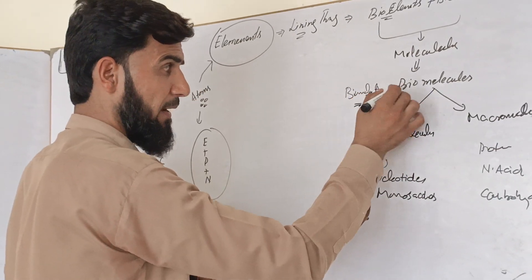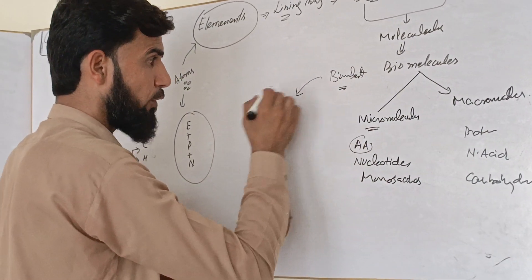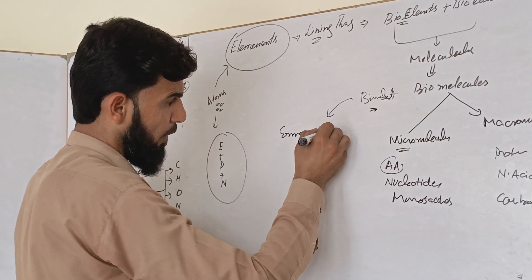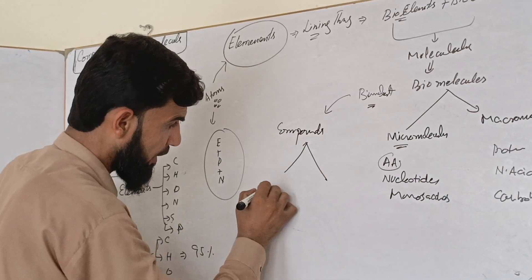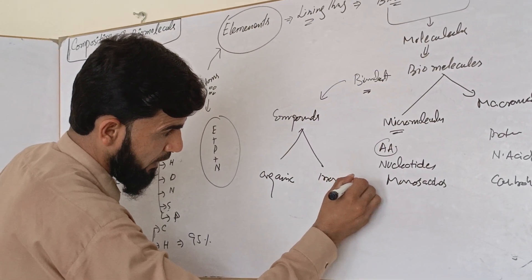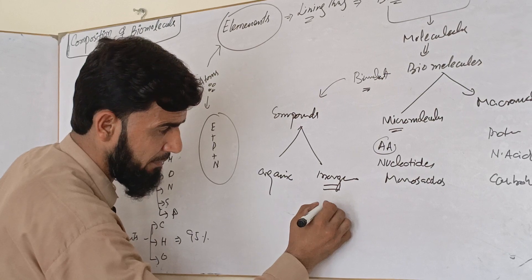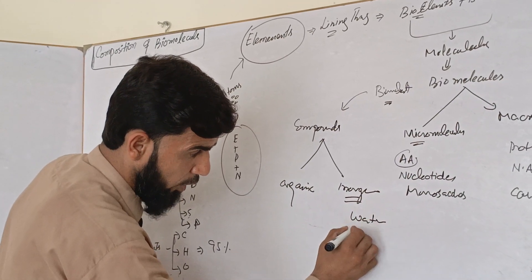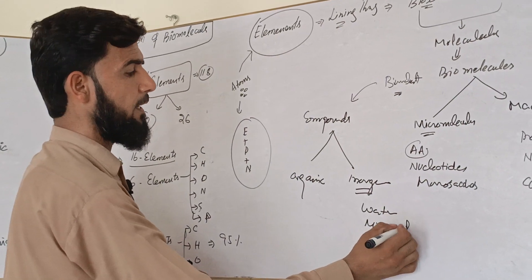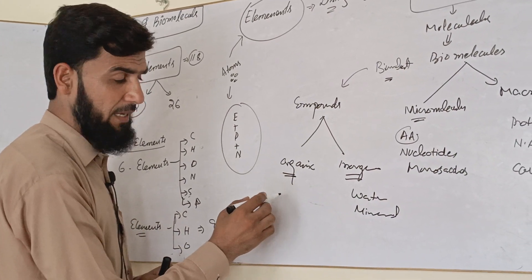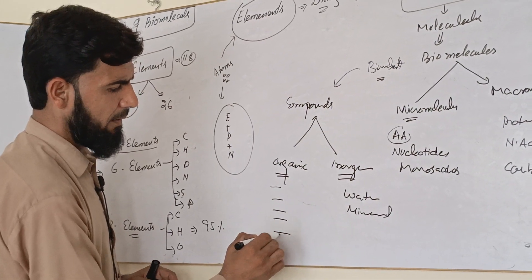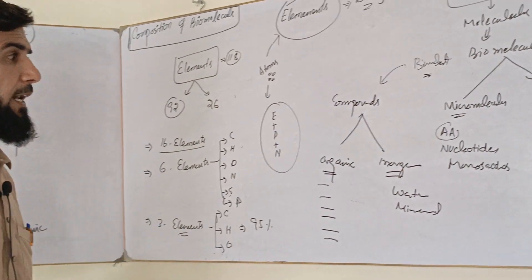These biomolecules are compounds — either organic or inorganic compounds. In the inorganic category, we have water and minerals such as sodium, potassium, and magnesium. In the organic category, we have carbohydrates, proteins, lipids, nucleic acids, hormones, and enzymes.